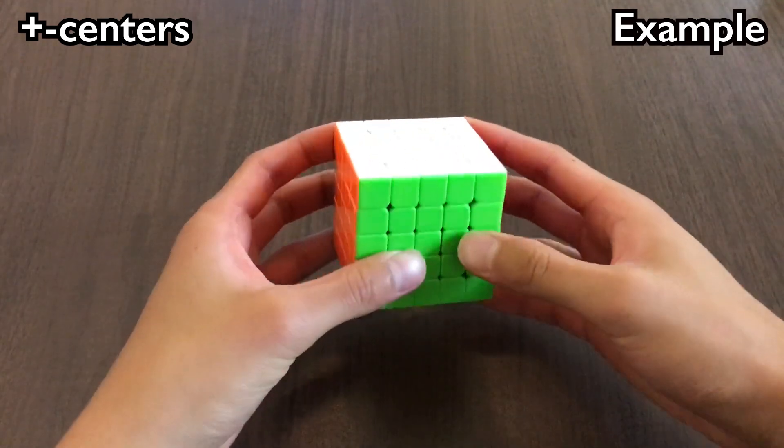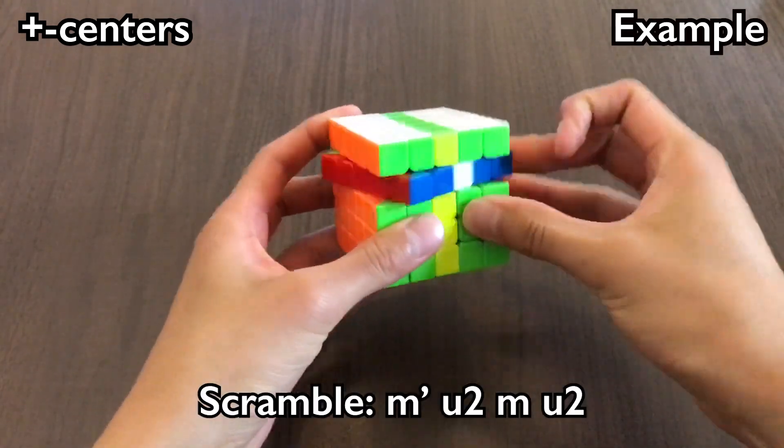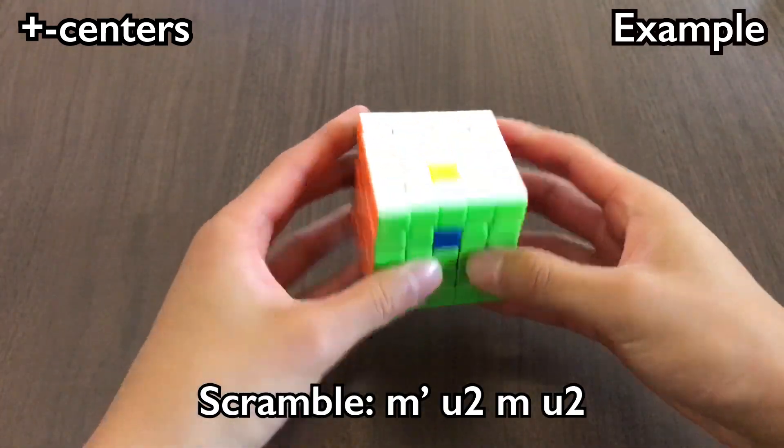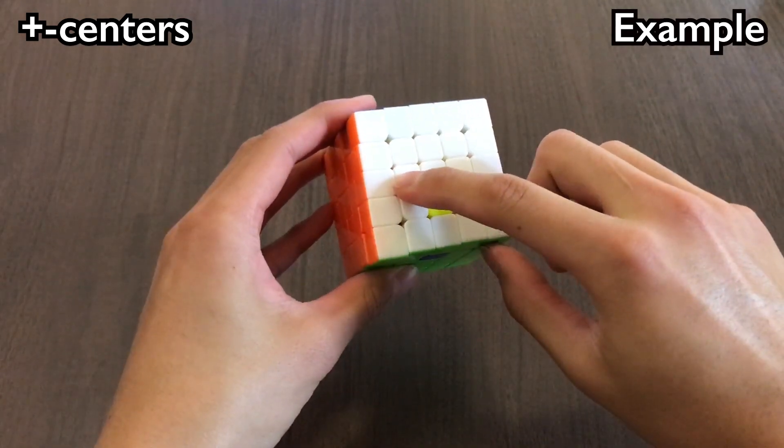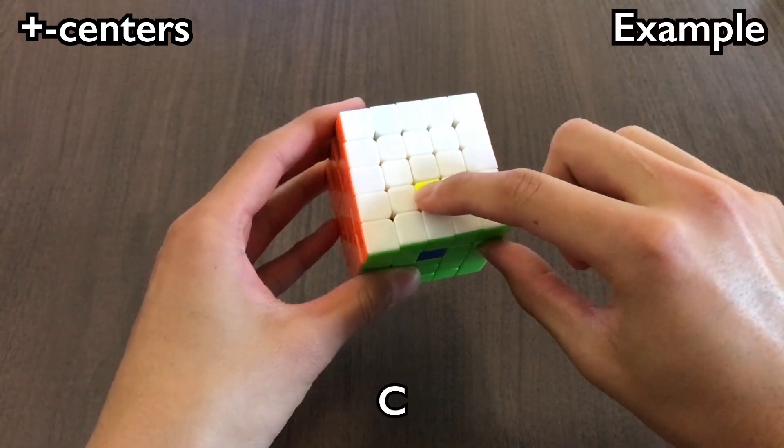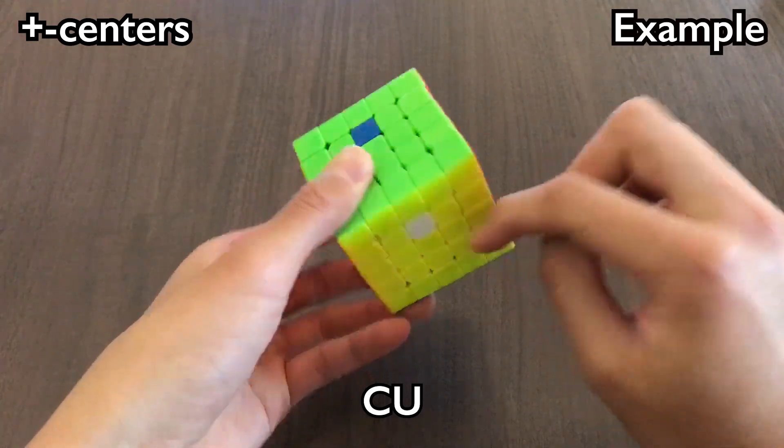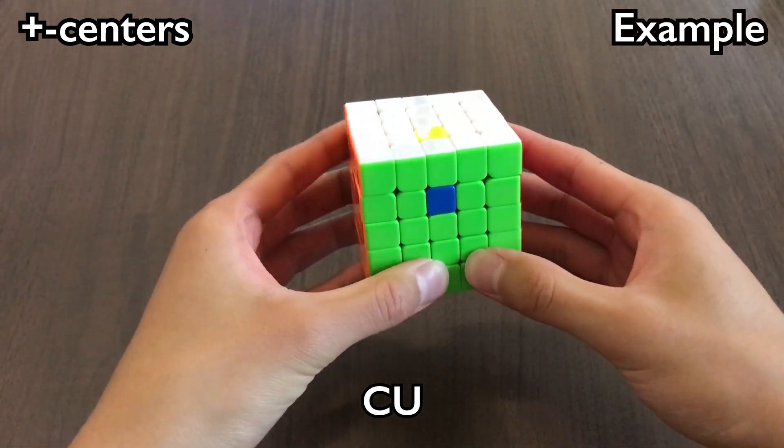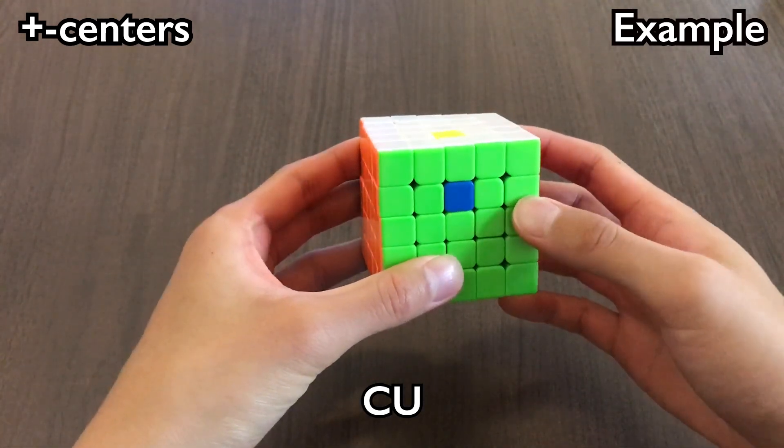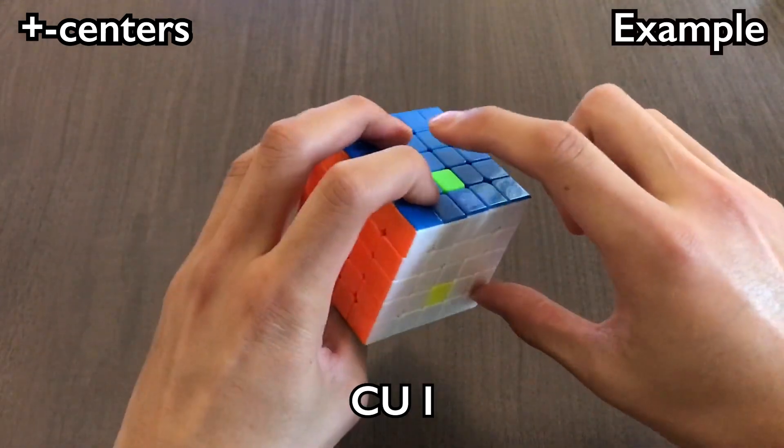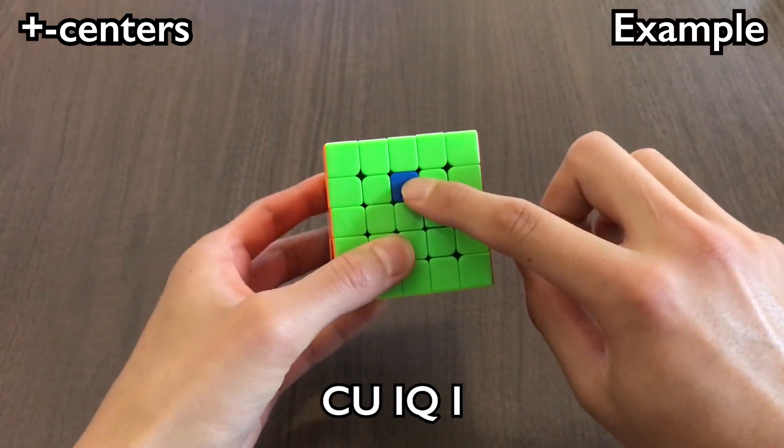Let's take a look at an example. Do this scramble: M' U2 M U2. So first, we start by looking at our buffer. This white center needs to go to C, which needs to go to U. And now, since all the white centers are solved, we need to break into a new cycle. I'll shoot to I, which goes to Q, and then back to I.